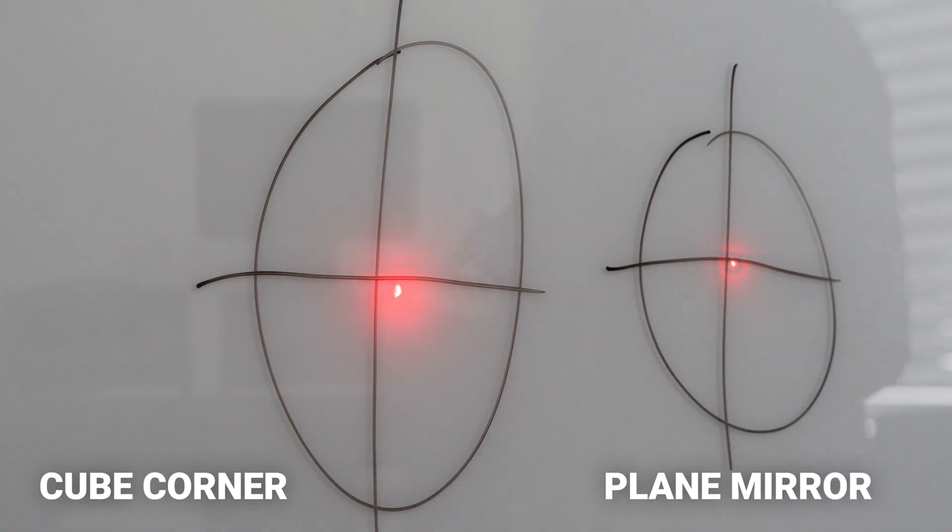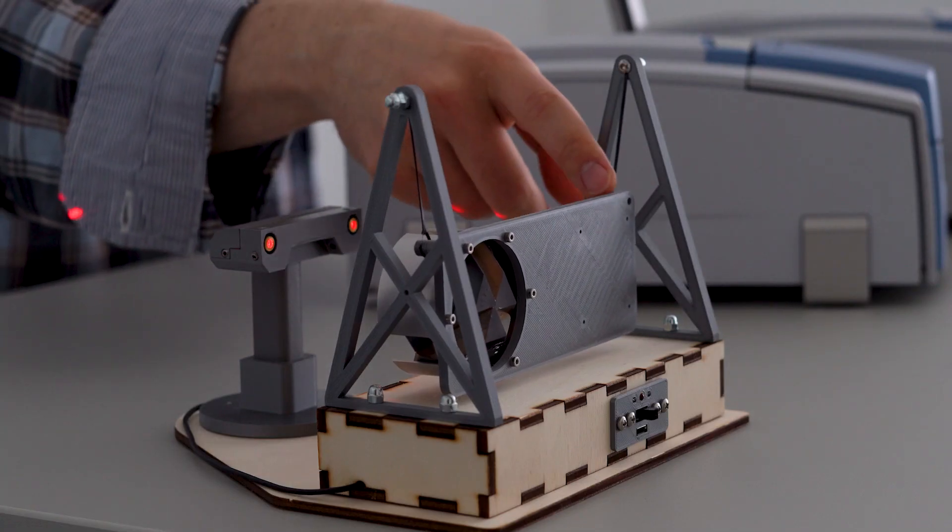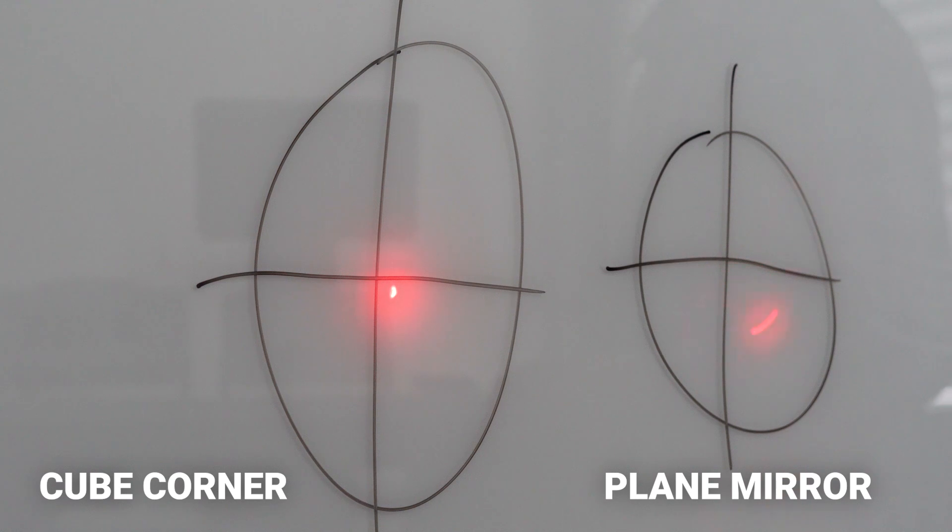Now it's time to give the device a little challenge and introduce an external disturbance. The plane mirror dot is going crazy, leaving its mark completely. You can also see the laser beam moving in all directions.